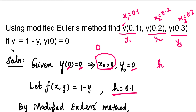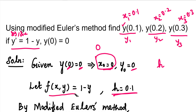Here is the differential equation. y-dash is dy/dx. In dy/dx, we have f(x, y). The value of f(x, y) is 1 - y. We need to find y1, y2, and y3 — three values in total.